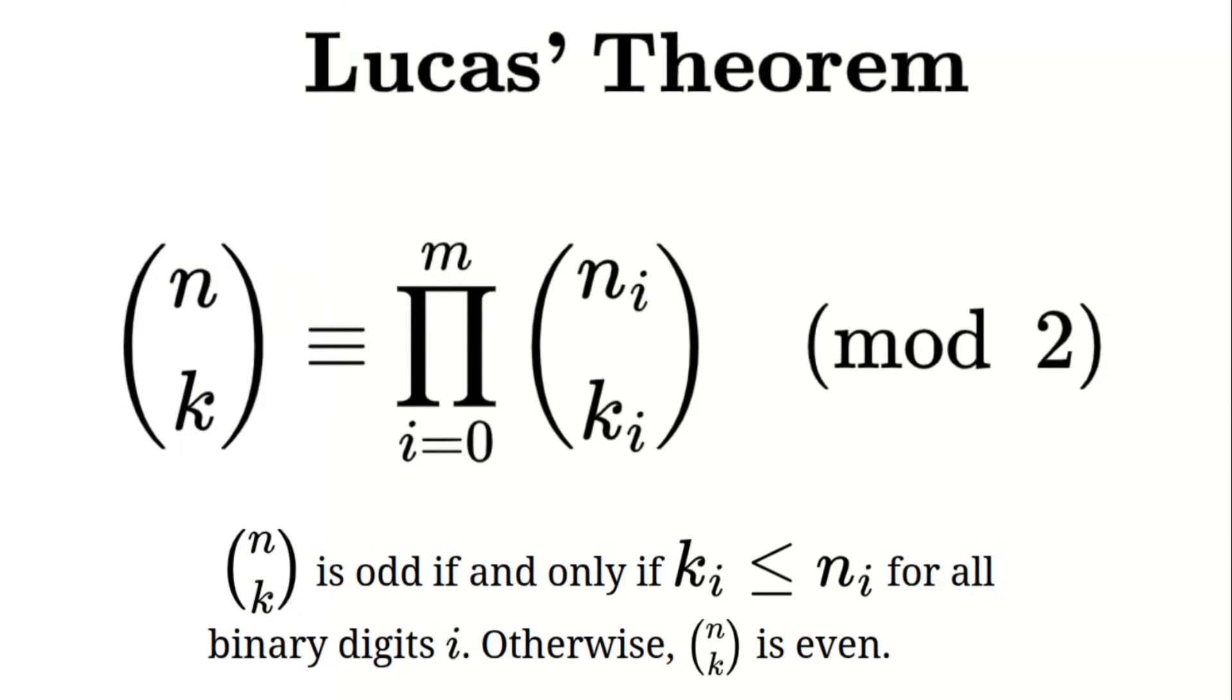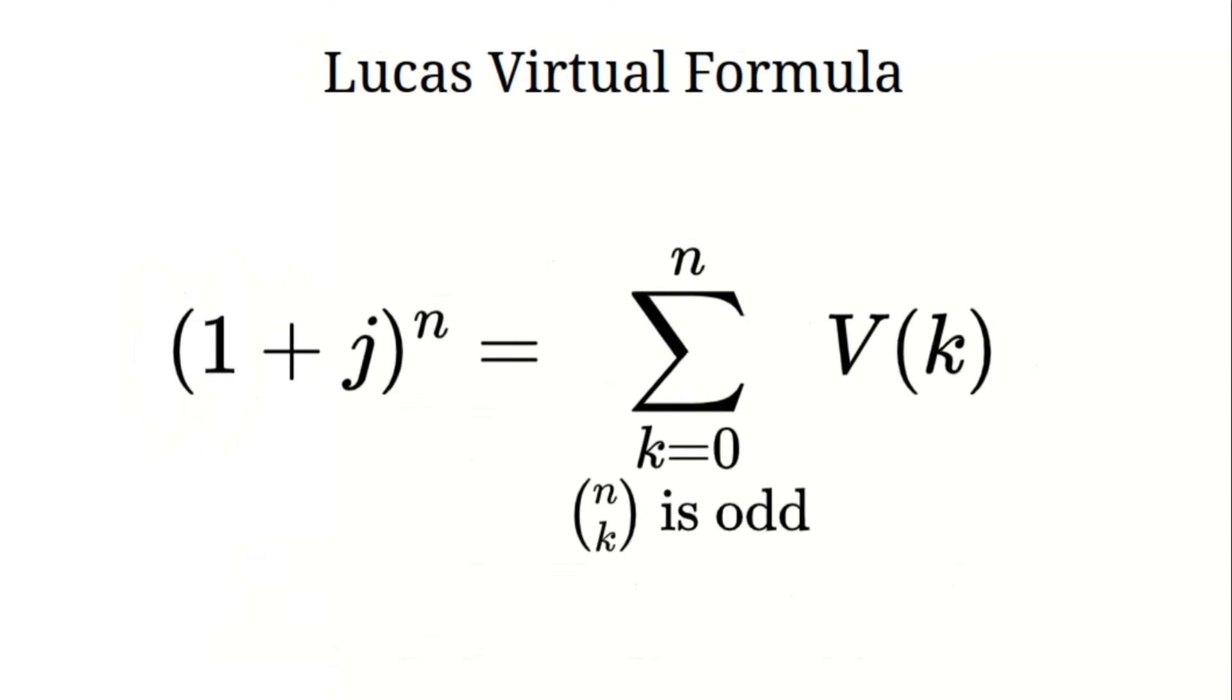This means that in our expansion we only keep the terms where n choose k is odd because all the even terms become zero in the virtual number system. Mathematically this simplifies our formula to the sum of V of k for all k where n choose k is odd. This tells us that only the V of k terms where the binomial coefficient is odd will contribute to our expansion.